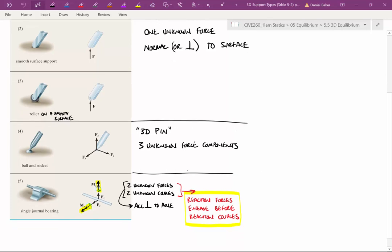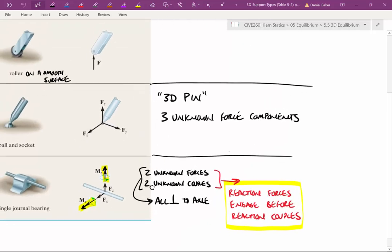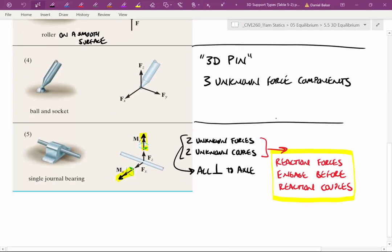The more complicated ones come from different bearing style reactions. The complexity comes in that not only do we have force resistance, but we also have moment resistance. Keep in mind that force resistance resists translation. For this journal bearing, we have resistance to translation both perpendicular to the axle itself. Additionally, resistance to rotation around these axes, which are in the same direction as the two forces.